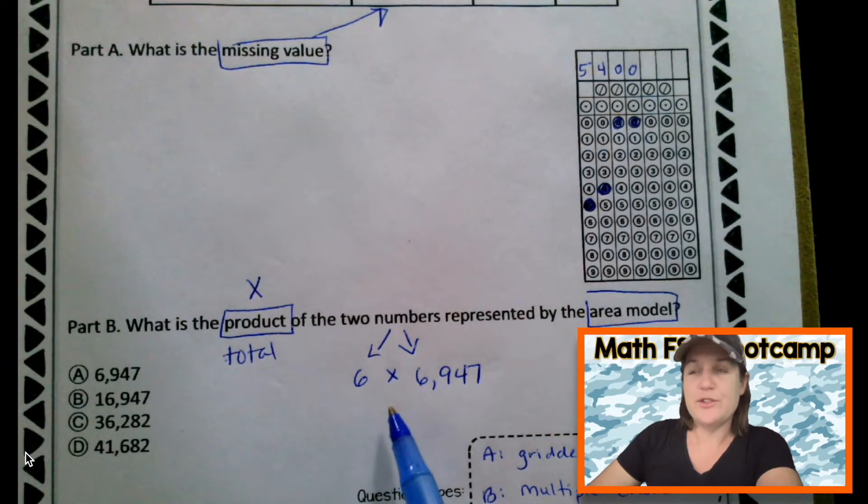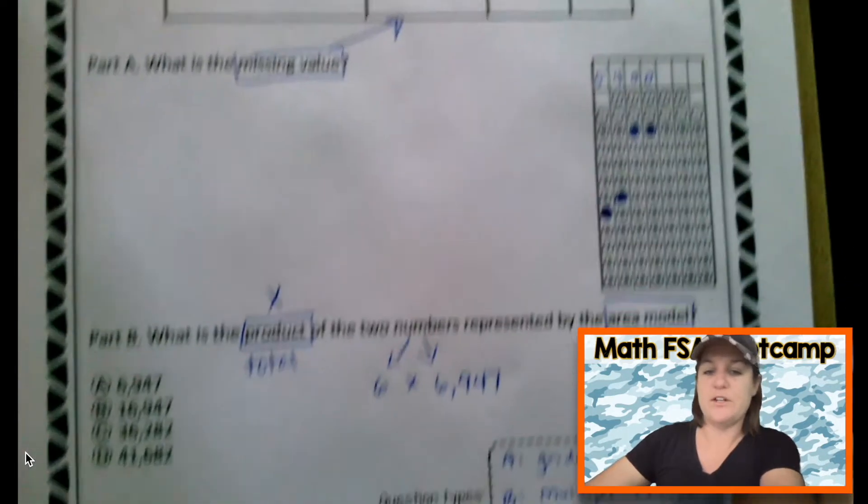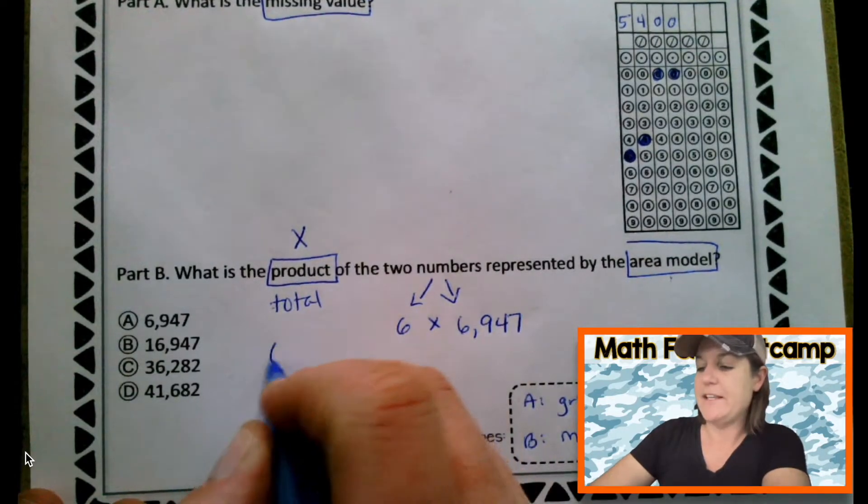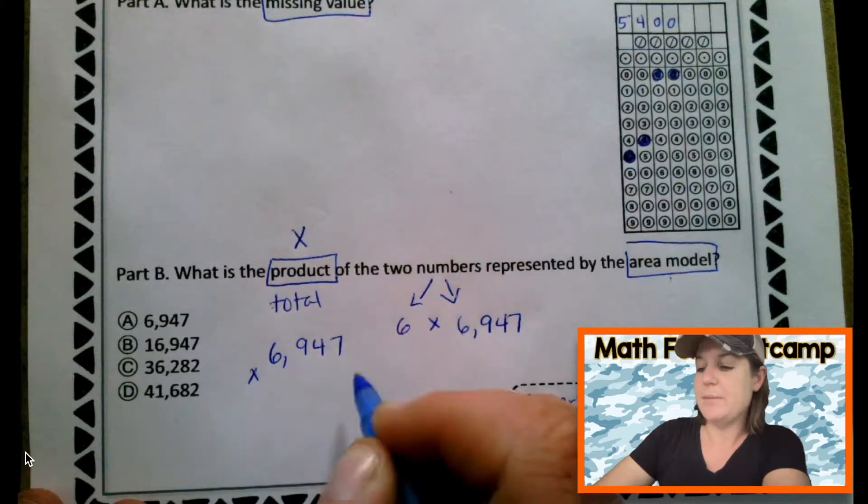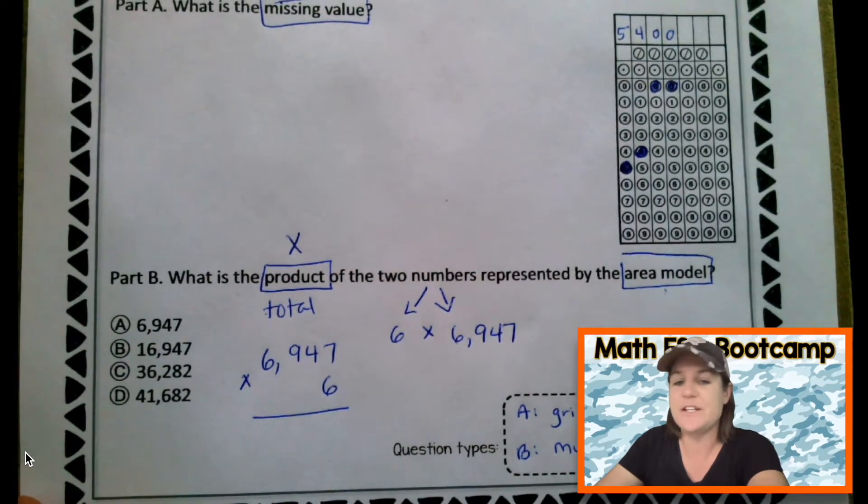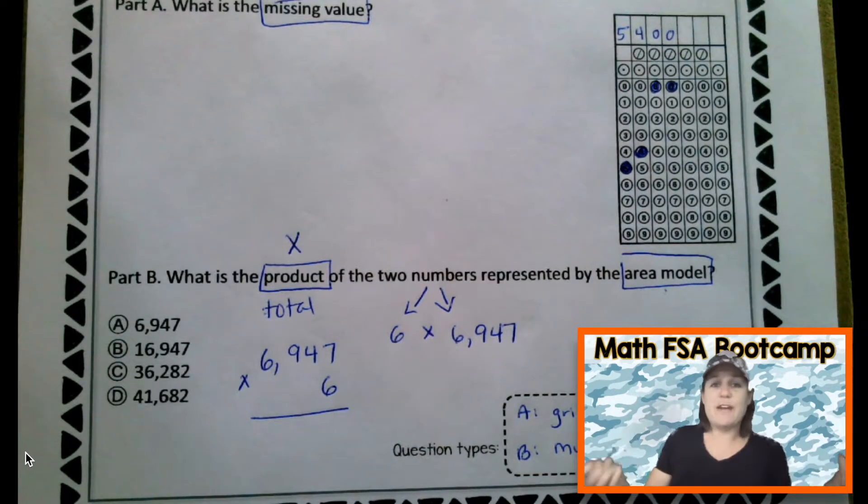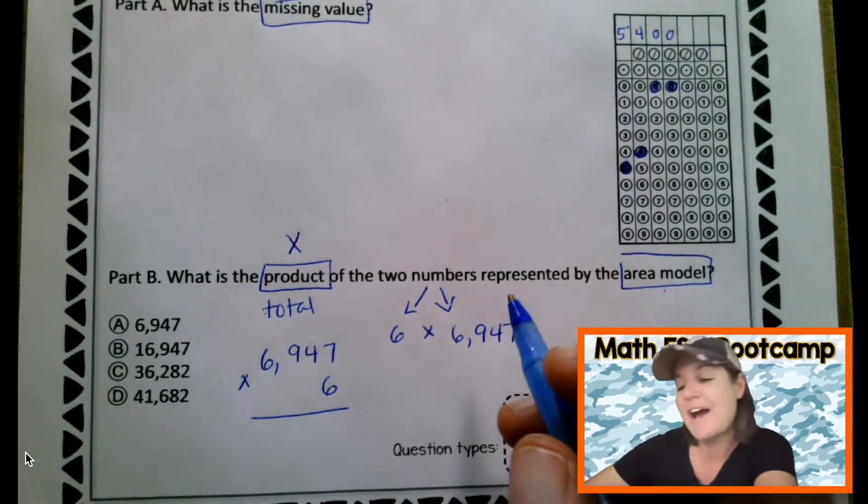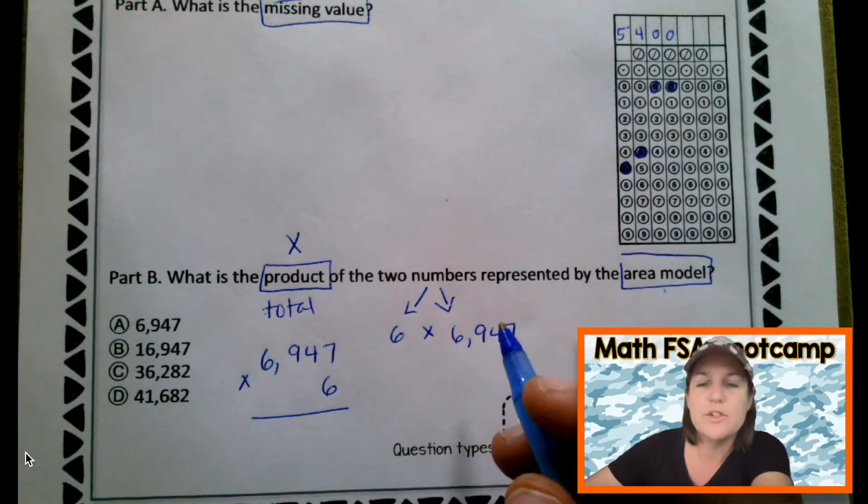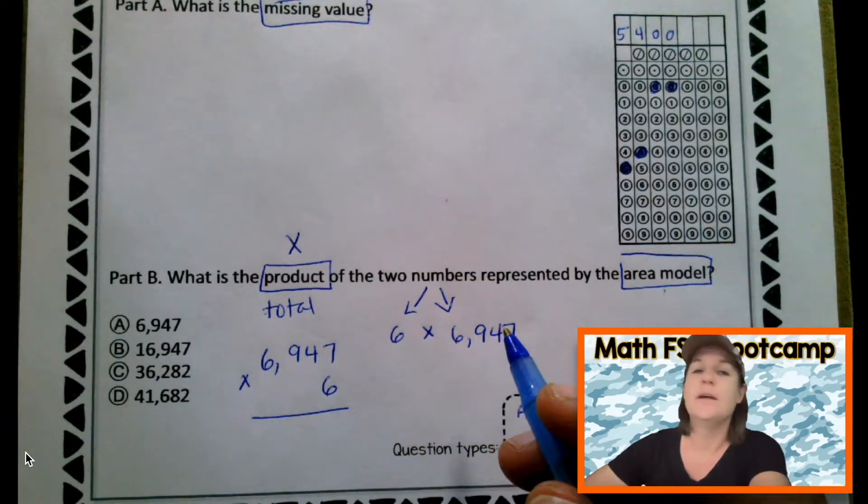Let me put it up here so you can see it. Now, I'm going to do the standard algorithm real quick. And then what I'm going to do is finish out the area model. So first the standard algorithm. I like to take the greater number first, put that on top, and I put the one digit on the bottom. It just makes it easier for me. And because we are multiplying, we can flip-flop those factors because of the commutative property, which is a song I have on YouTube. Properties of multiplication. Check it out.